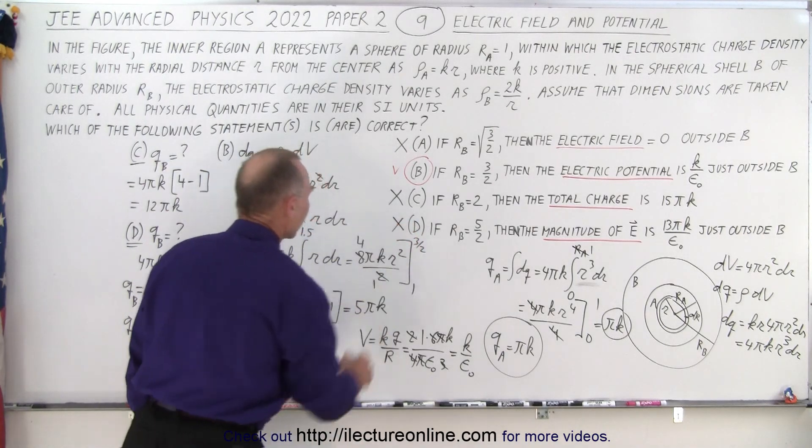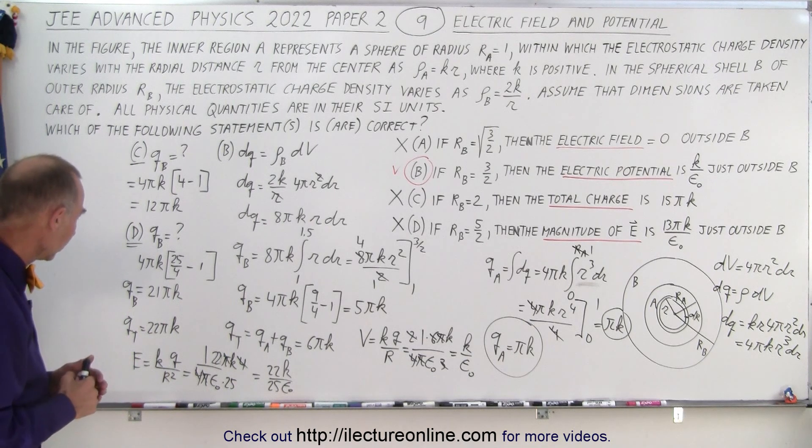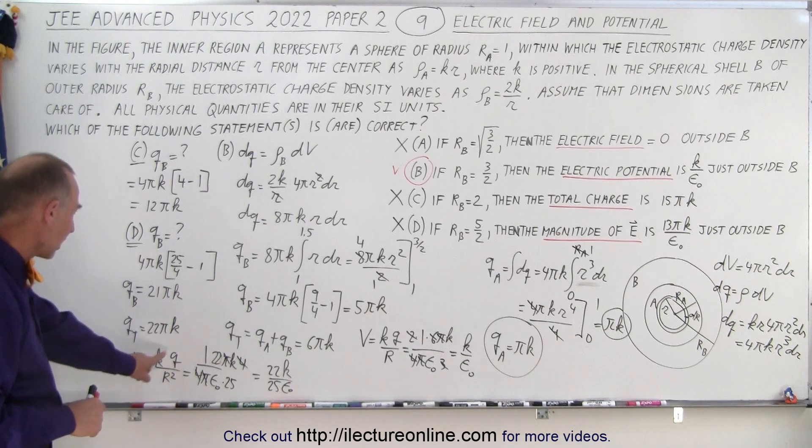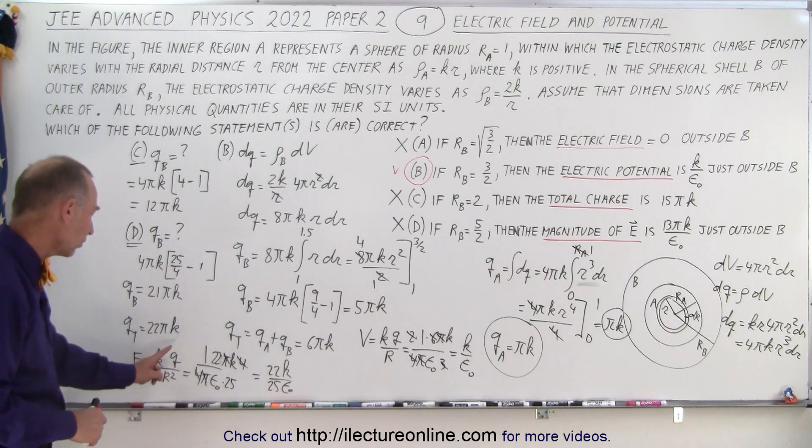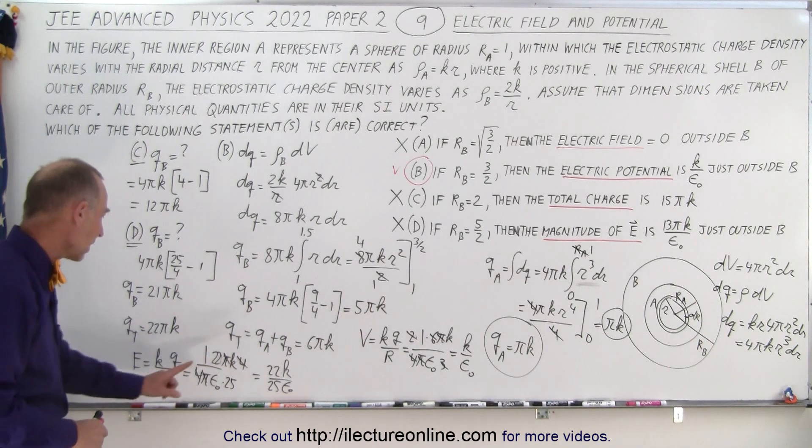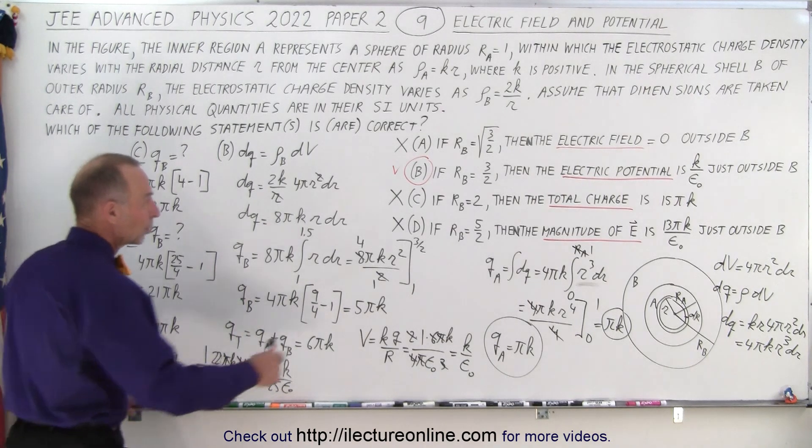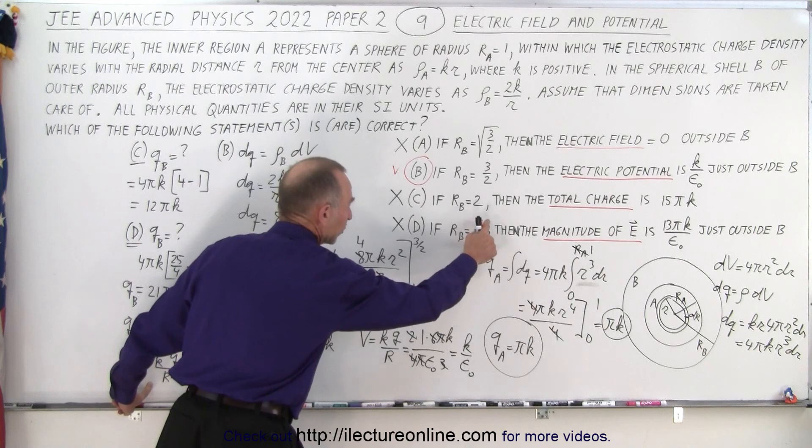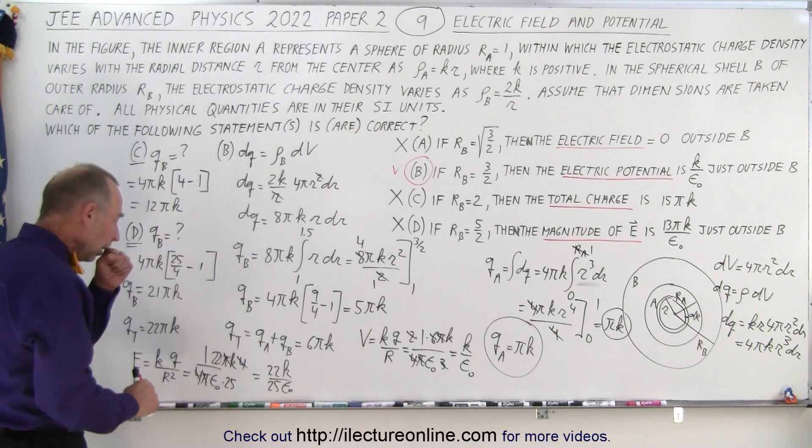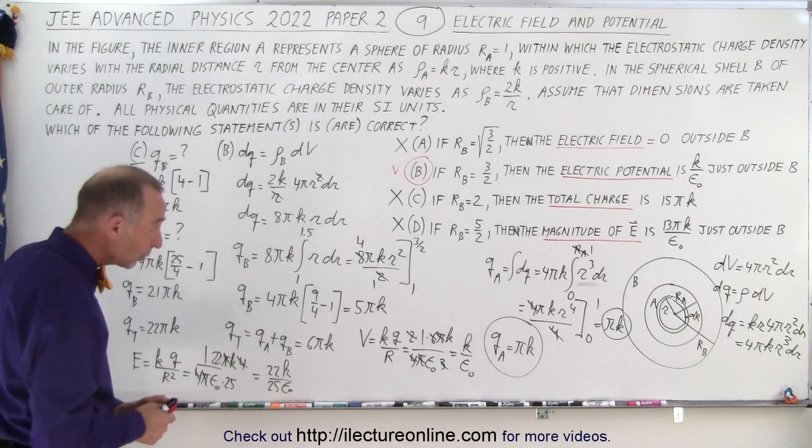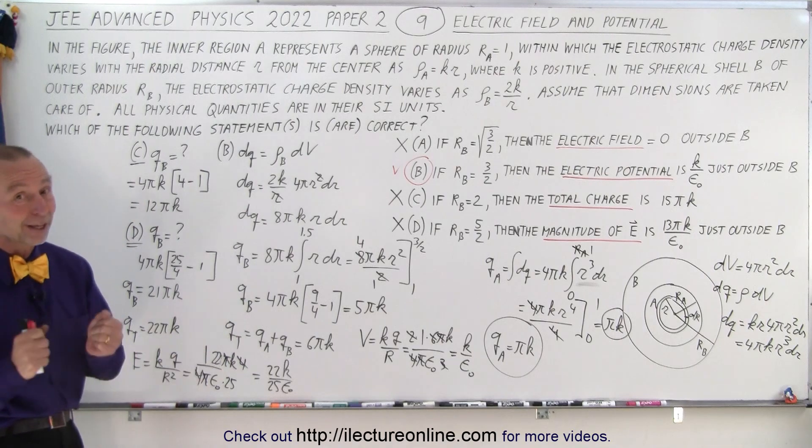So d is not part of the answer. So only b is the correct answer out of the 4. So quickly check this again. kq over r squared. k is 1 over 4 pi epsilon sub-naut. q is 22 pi k. And r squared, that would be the radius squared. That would be 25 over 4. So 25 in the denominator, 4 in the numerator. So definitely not even close. That's not the right answer. And that is how it's done.